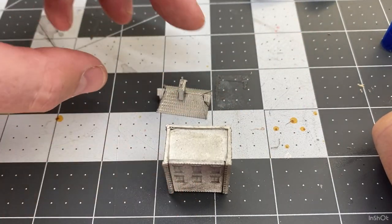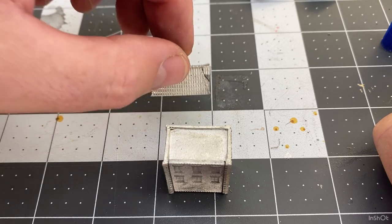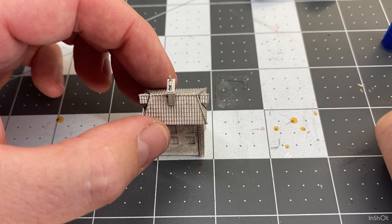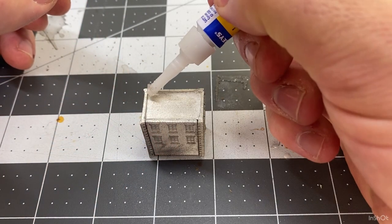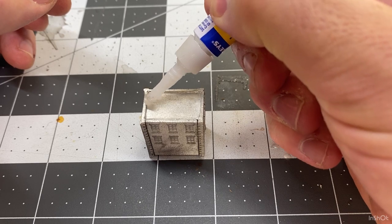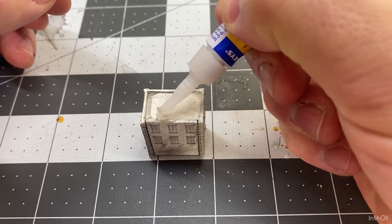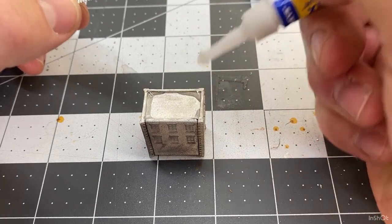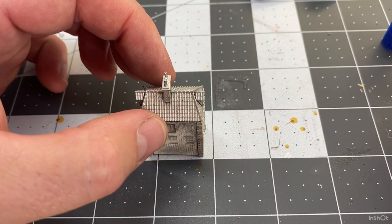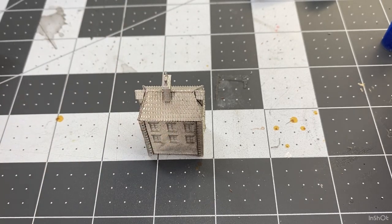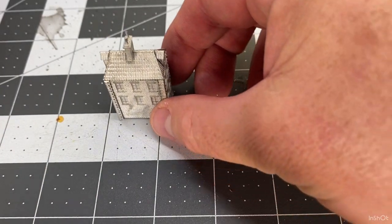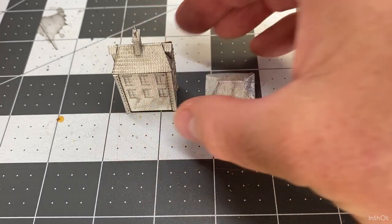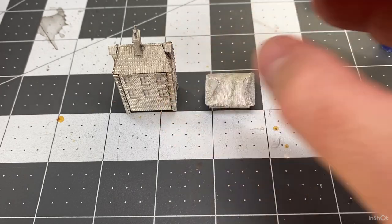Come back to the building, just make sure that roof is going to sit on it alright. Then I'll just run a bead of glue around the top. Set that roof on there. That's what I do for the assembly of the buildings.